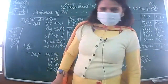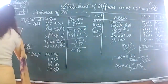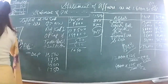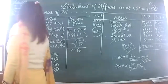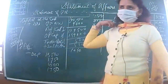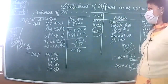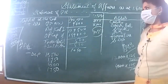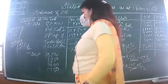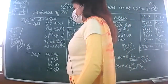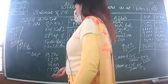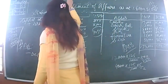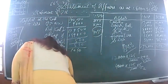Now provision for discount on debtors: after deducting bad debts and provision, net debtors are 33,250. At 2% provision for discount: 33,250 × 2% = 665. So provision for discount is 665. Less provision for discount on debtors: 665.